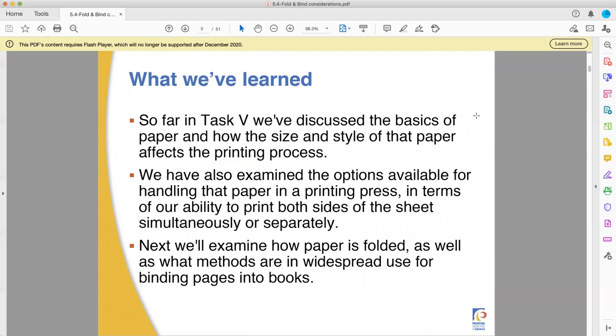So far, Task 5 has shown things about how paper and paper size and the style of paper affects your printing process. We've looked at the ways of handling the paper while printing, in terms of printing one side and flipping it, or printing both sides at once on a giant web. Now we're looking at the folding and binding together of the sheets that we've printed, and how does this all come together to create that project we were originally thinking, and stop just being ink on paper with no purpose?